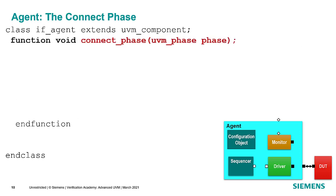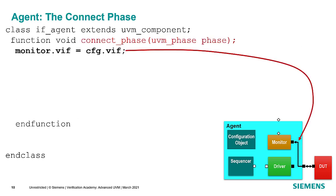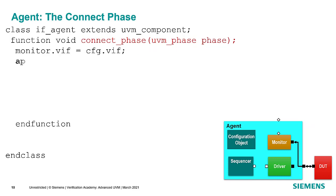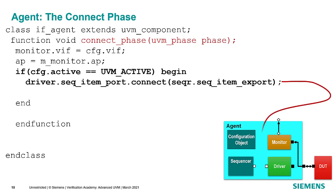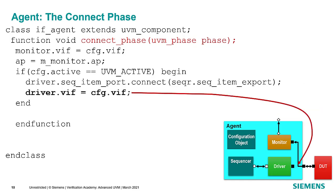The environment is also a component extended from the uvm_env base class and registered with the factory. We declare sub-components — in this case two agents, a scoreboard, and a coverage collector — as well as the config object, and define the standard component constructor. In the environment's build phase, just as with the agent, we look for the config object in the config database and declare a fatal error if it's not there. If you have things like a coverage collector, the connect phase is where you connect them to the monitor's analysis port.